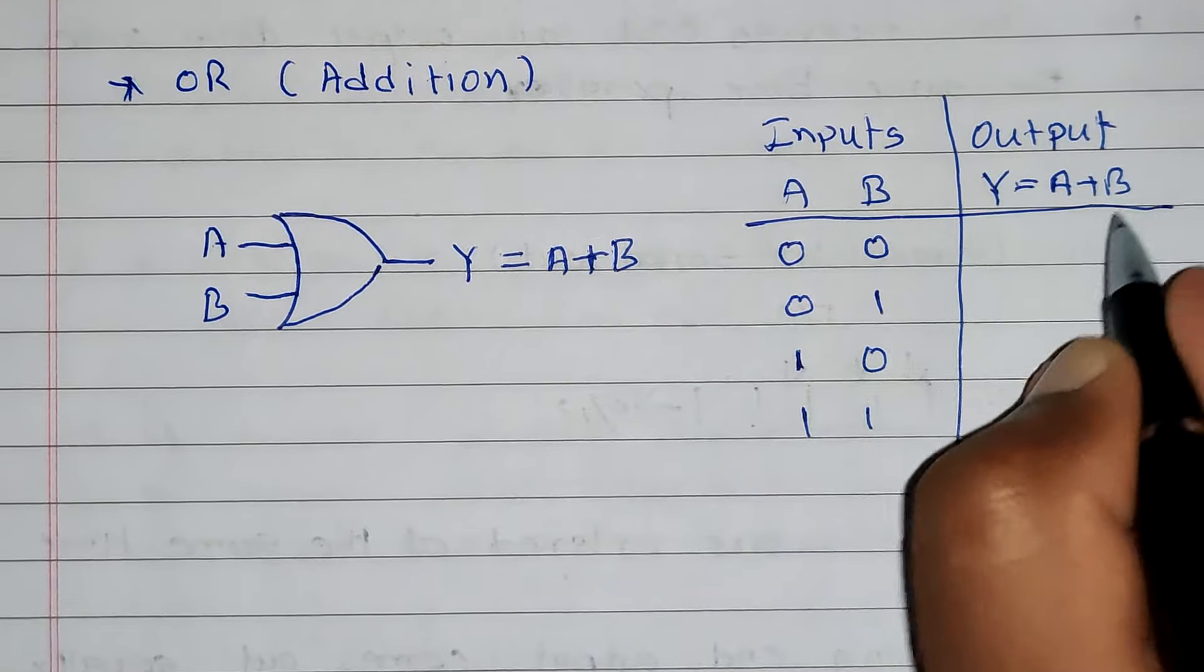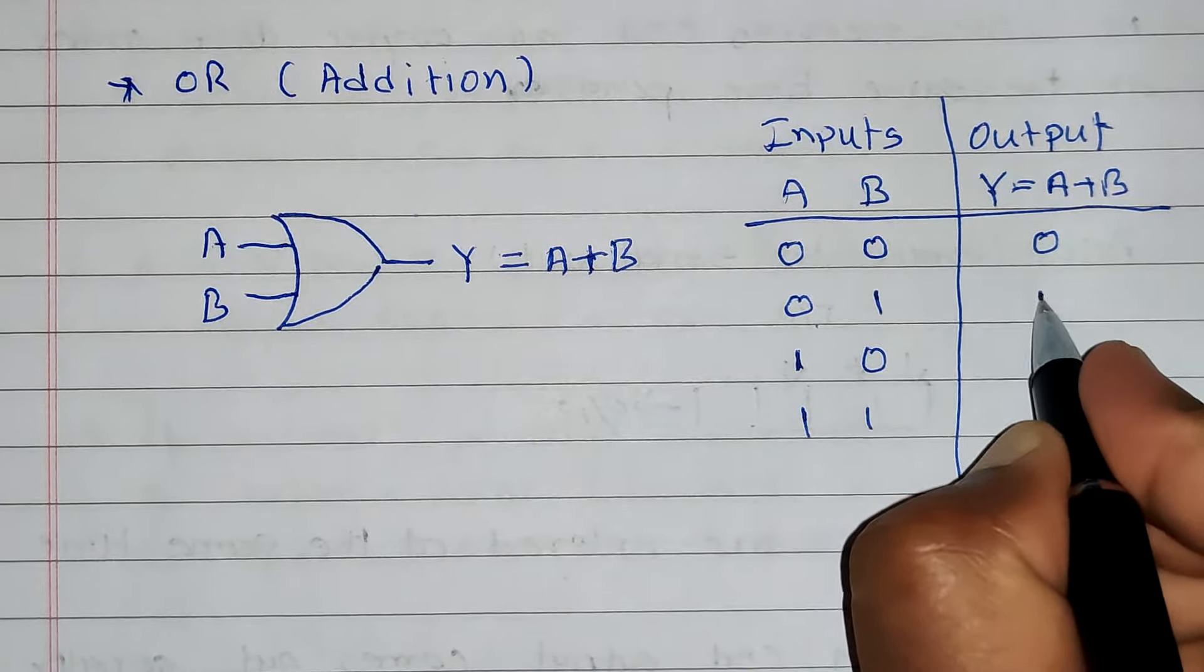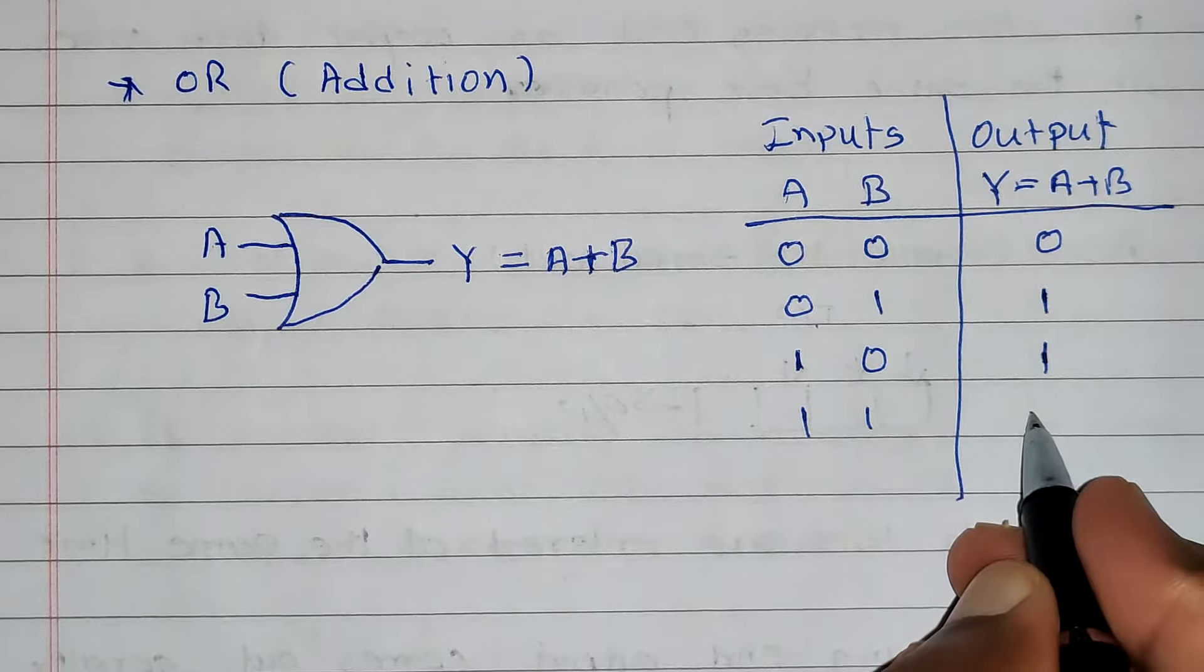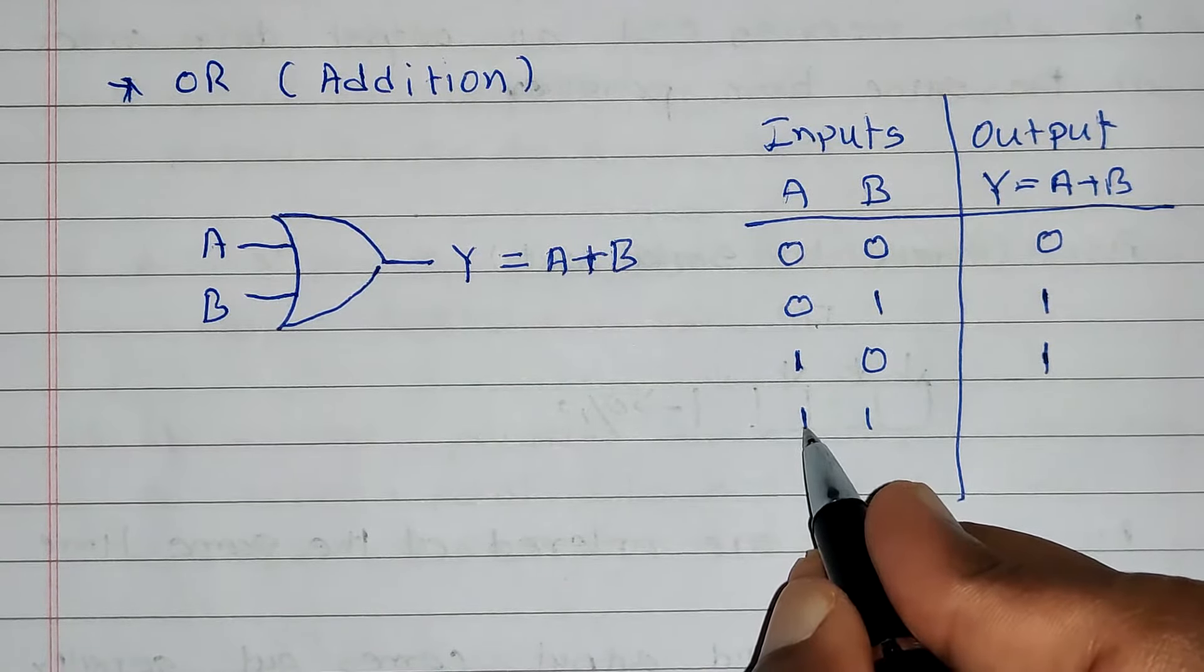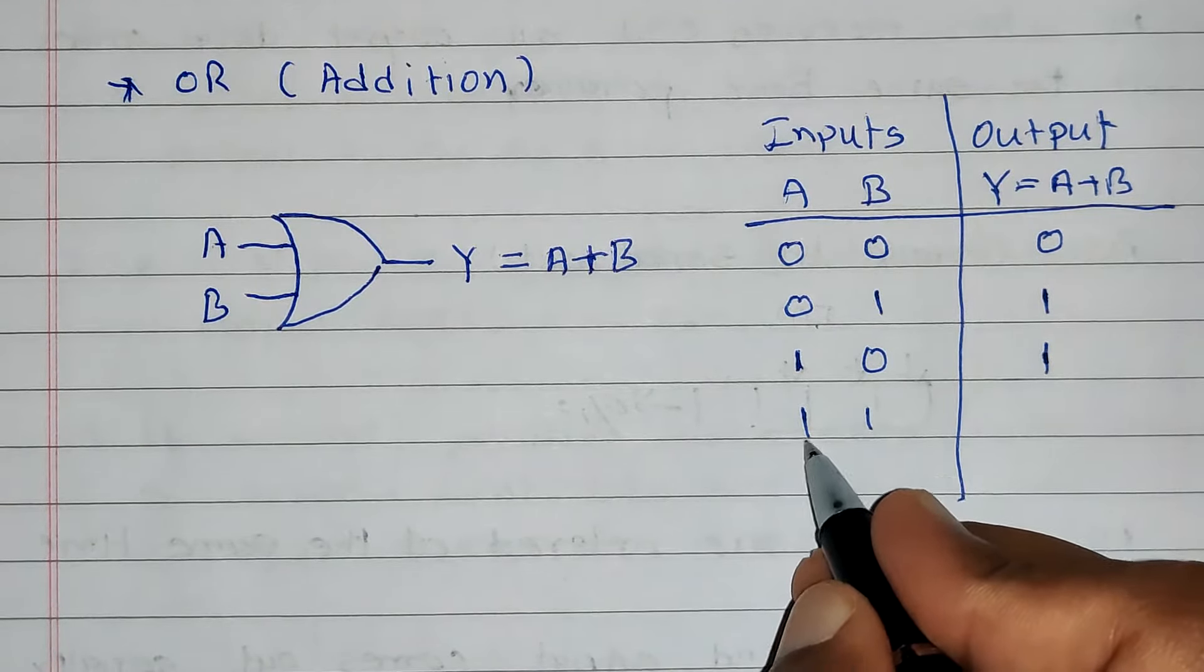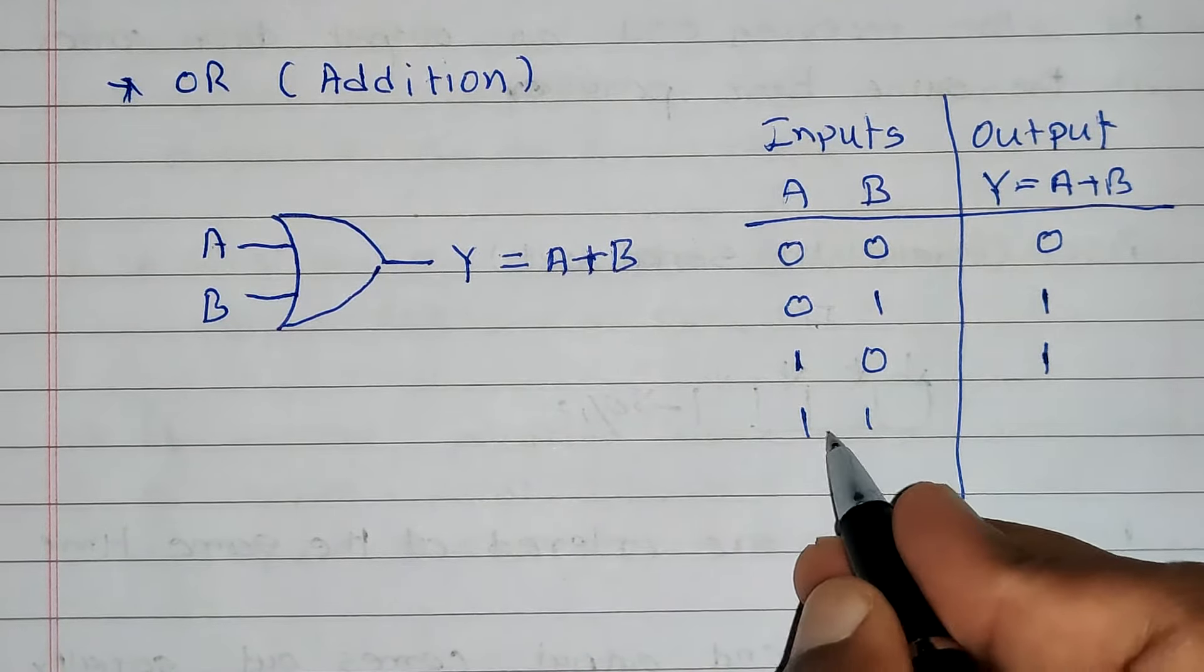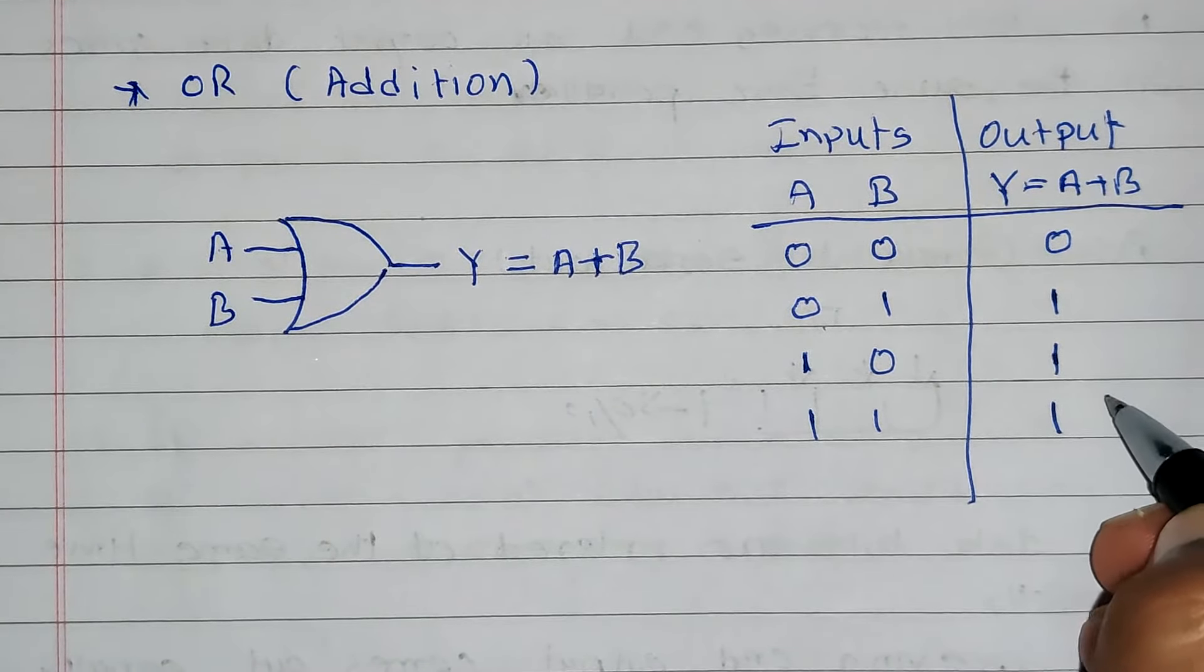Let's perform addition. 0 plus 0 is 0. 0 plus 1 is 1. 1 plus 0 is 1. And 1 plus 1—in decimal pattern, 1 plus 1 is 2, but these are signals. Generally, 1 indicates high and 0 indicates low. So if we add high plus high, we're never going to lose signal. High plus high is high, so 1 plus 1 is 1. Therefore, we will get 0, 1, 1, 1 as the output.